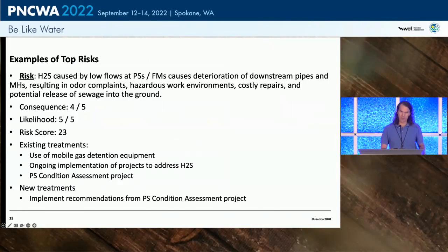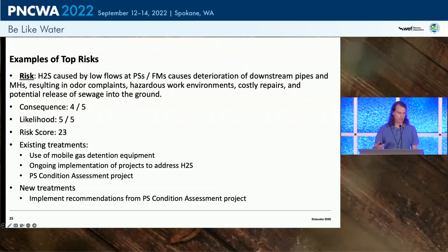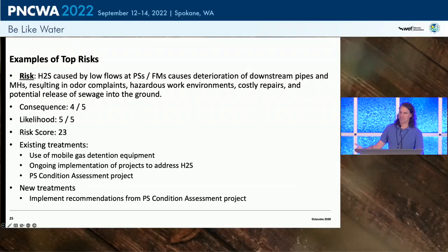Now let's drill into some specific example risks floating to the top. H2S caused by low flows deteriorating the system, resulting in odor complaints and hazardous work environments. We gave that a consequence score of four because of the hazardous work environments, and a likelihood of five because it's a known problem that happens on a regular basis. Overall risk score with the creative math was 23. Existing treatments include mobile gas detection equipment and ongoing H2S mitigation projects. There's a big ongoing pump station condition assessment project, and a new treatment that emerged was: it's one thing to prepare a plan, but let's not forget to implement the recommendations — because plans have a tendency to just sit on shelves.